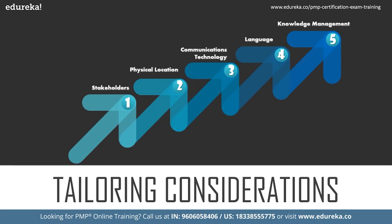While looking at those communication needs, one must ensure communication happens as needed by the stakeholders. Stakeholders need to be identified. Looking at the overall framework of 10 knowledge areas, 5 process groups, and 49 processes, in the initiating process group there are two processes: one in integration management and one in stakeholder management. Once the project manager is assigned, the first job is to identify stakeholders.